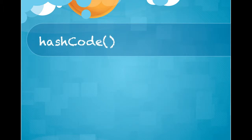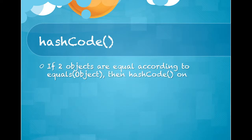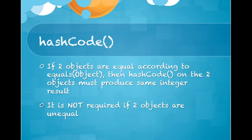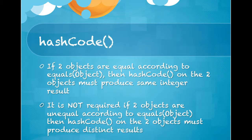Understanding the hashCode method: invoking it on the same object must produce the same integer result. It is not required that if two objects are unequal according to equals(), then hashCode() on the two objects must produce distinct results.